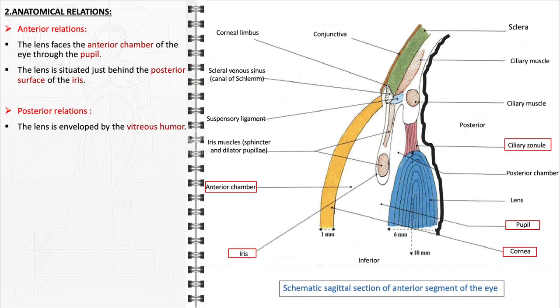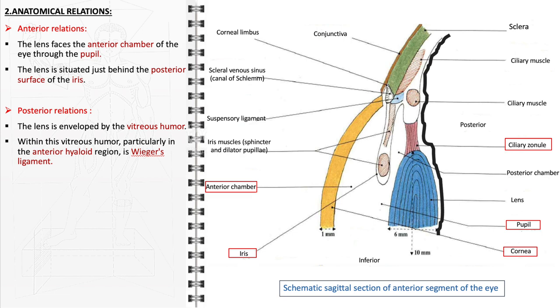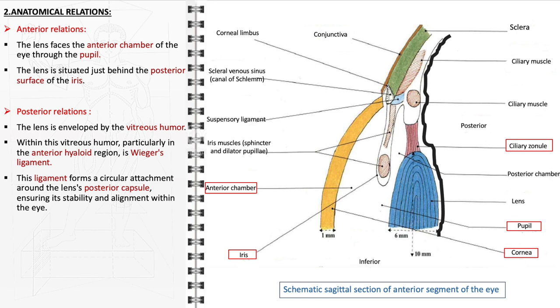Posteriorly, the lens is enveloped by the vitreous humor, which occupies the space between the lens and the retina. The vitreous humor provides structural support and helps maintain the spherical shape of the eye. Within this vitreous humor, particularly in the anterior hyaloid region, is Ouija's ligament. This ligament forms a circular attachment around the lens's posterior capsule, ensuring its stability and alignment within the eye.